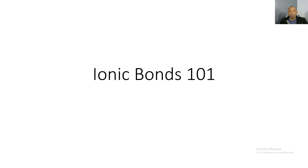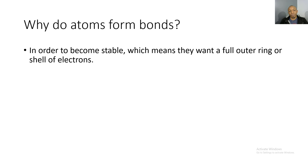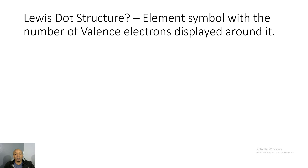Good evening ladies and gentlemen, we're back once again with another video. This tutorial is going to be over ionic bonds. Why do atoms form bonds? As I previously talked about in the covalent bonds videos, atoms form bonds in order to become stable, which means they want a full outer ring or shell of electrons.